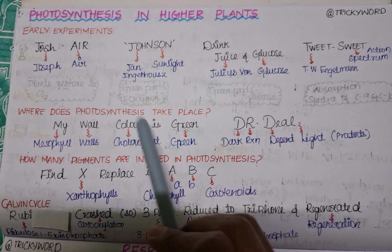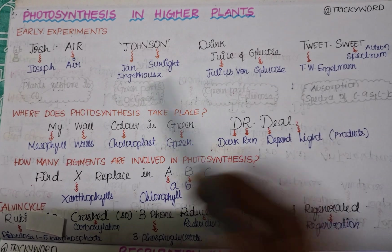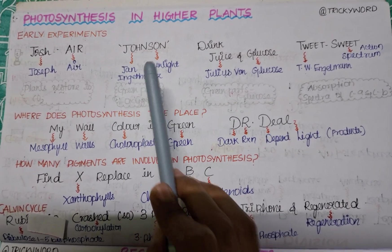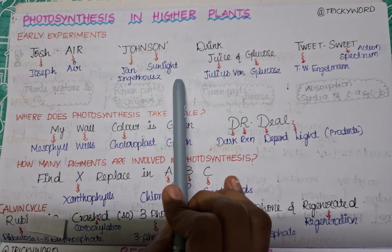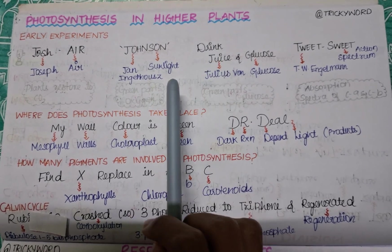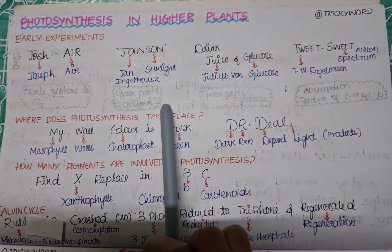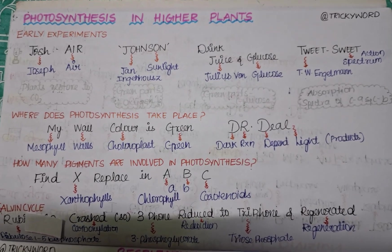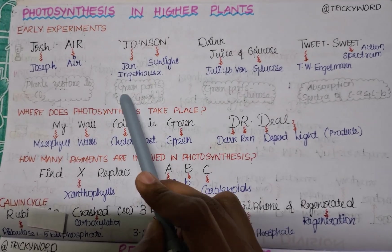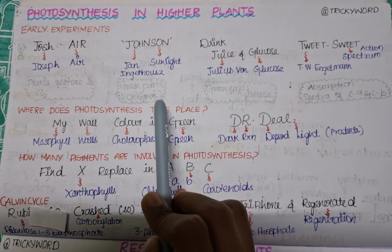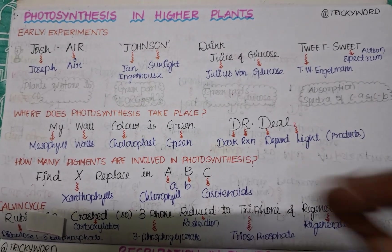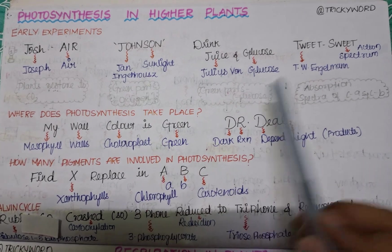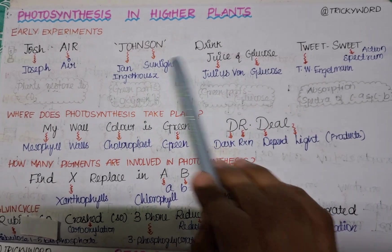The next trick is 'Johnson' — like the famous baby product Johnson & Johnson. Here 'John' is for his name Jan, and 'son' is for sunlight. He showed the experiment using sunlight, demonstrating how sunlight plays an important role in photosynthesis. He found that in the green parts of the plant, oxygen is formed — this is also a key finding from his experiment.